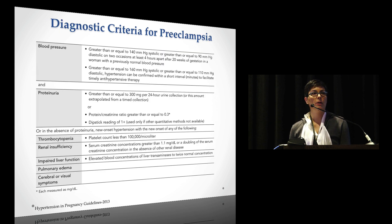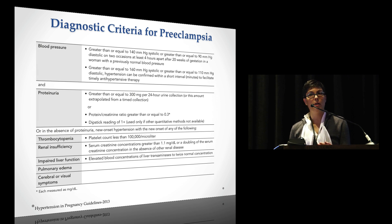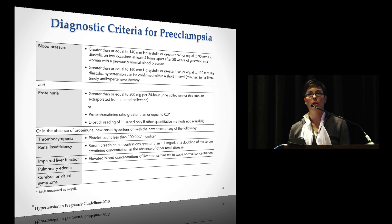Let's talk about the diagnostic criteria. The blood pressure criteria are the usual — 140 over 90, or if it becomes 160 over 110. But the difference is they also require proteinuria. So you had to have both hypertension and proteinuria.